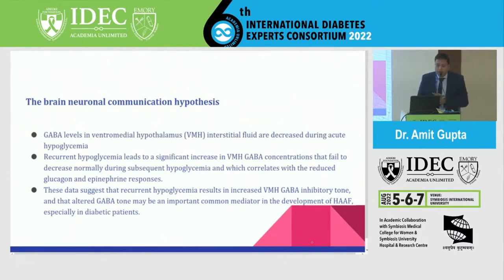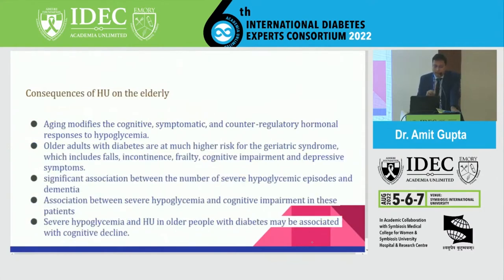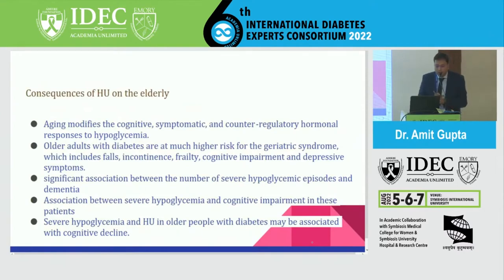The consequences of HU include a greater risk of severe hypoglycemia — up to six-fold — with serious morbidity including seizures, coma, fractures, joint dislocation, and cardiac arrhythmias. Intensive glycemic control can lead to HU, making it a detrimental factor for glycemic management. In elderly patients, aging modifies cognitive, symptomatic, and counter-regulatory mechanisms, placing older adults at higher risk for falls, incontinence, cognitive impairment, and depressive symptoms. Even a few episodes of hypoglycemia have been linked to onset of dementia and cognitive decline.